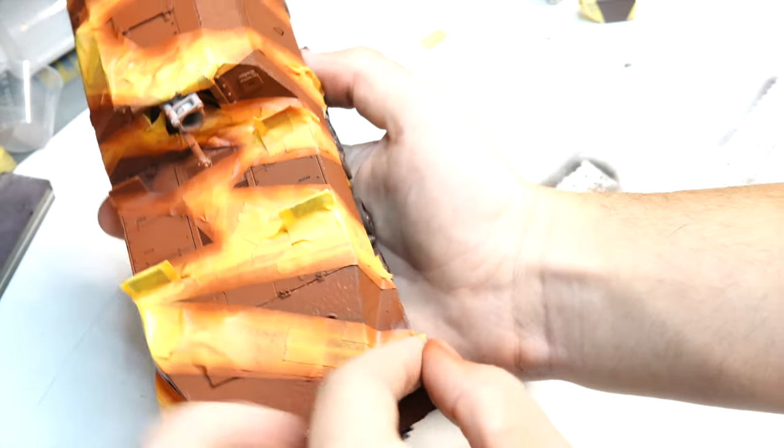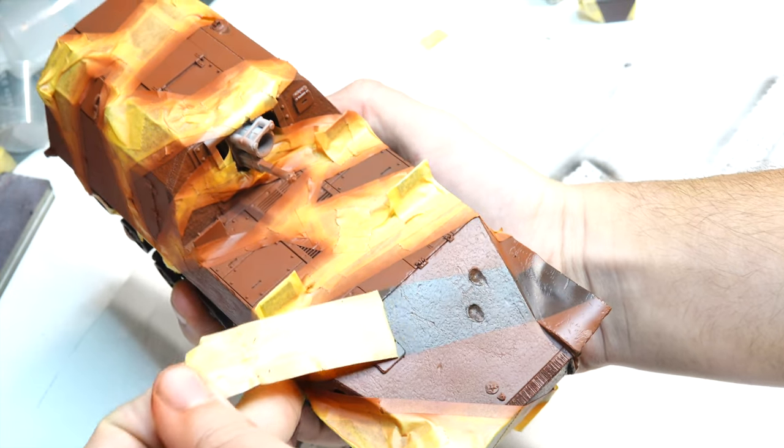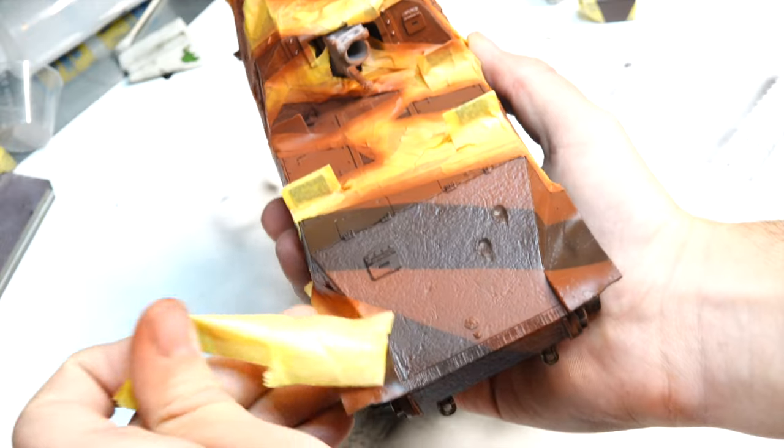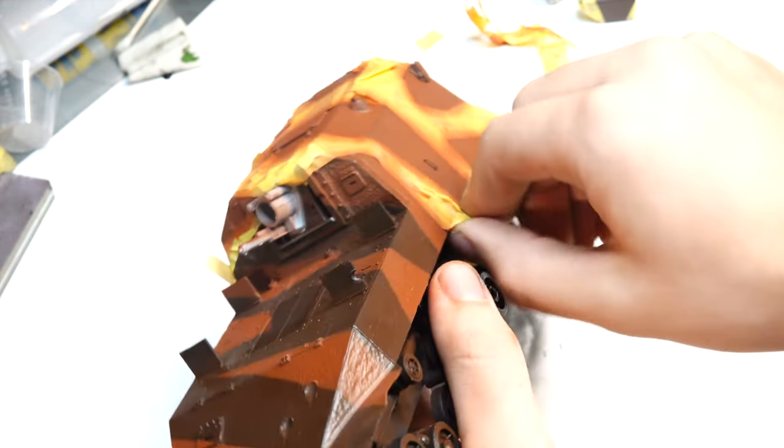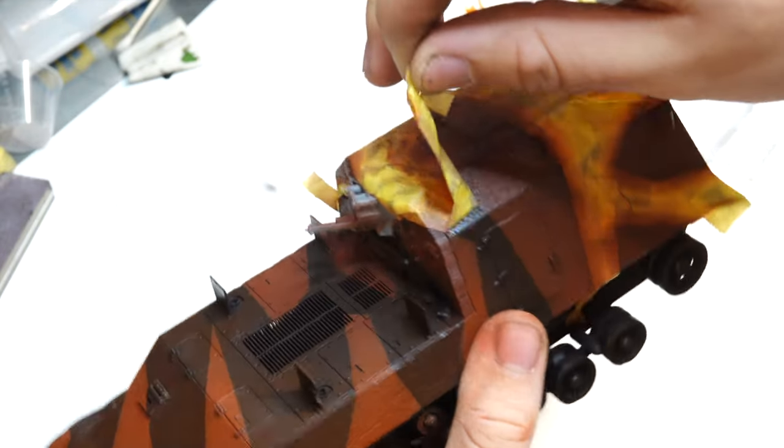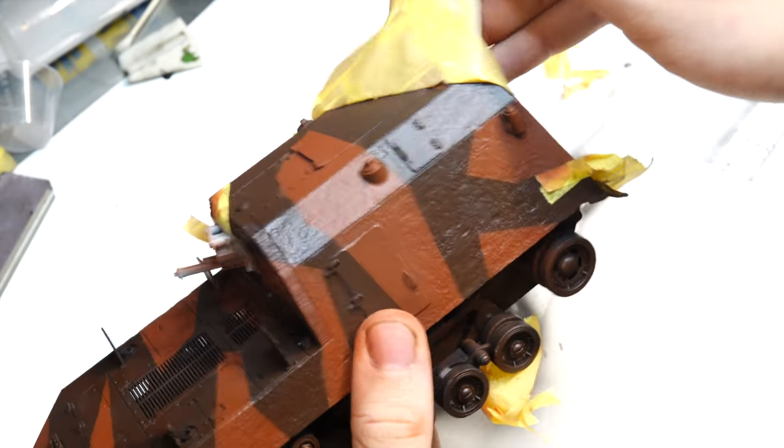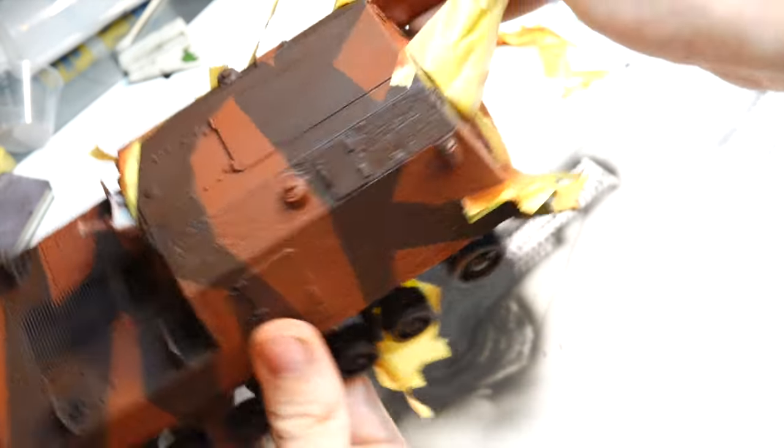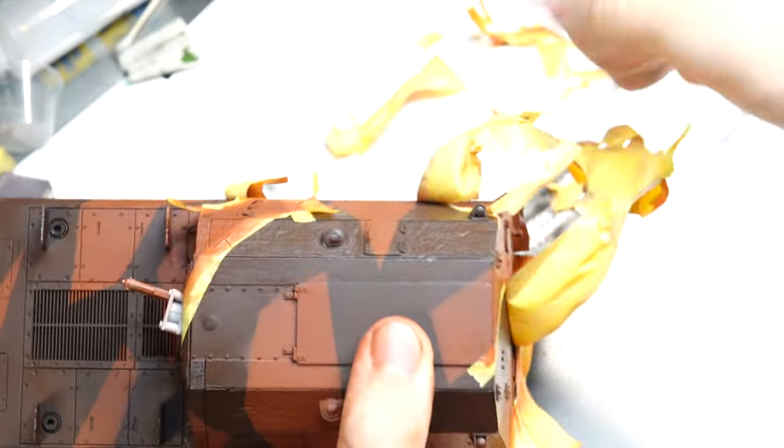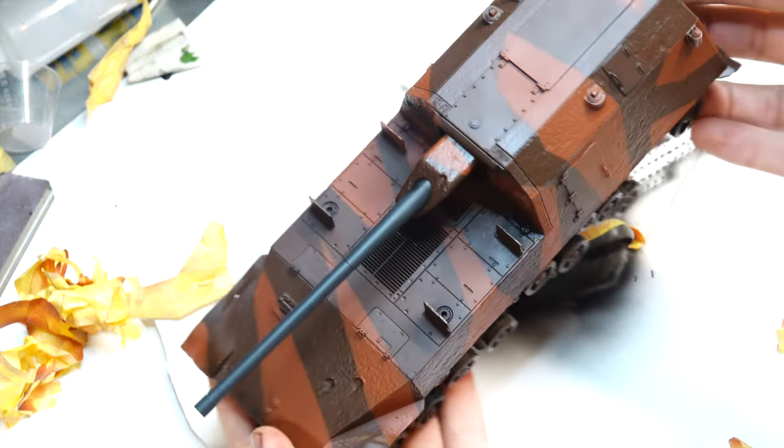Now the satisfying part, peeling off those sweet masks. Masking this whole thing took a solid half an hour, and I'm removing them all in about two minutes. It's pretty great seeing an entire camo coming to shape after peeling these things off. Right now it looks super clean, but don't worry I'll change that very soon.